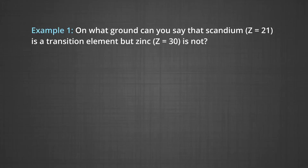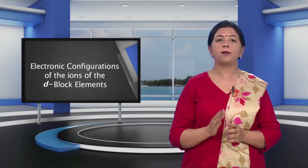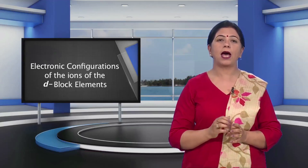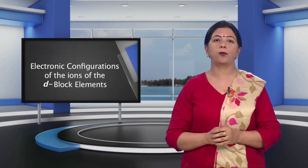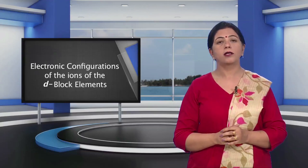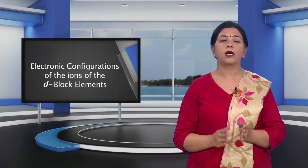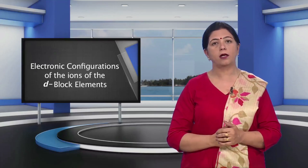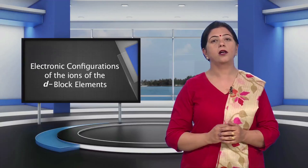Example 1: On what grounds can you say that scandium (Z = 21) is a transition element, but zinc (Z = 30) is not? Scandium atom in its ground state has an incompletely filled 3D¹ orbital, so it is regarded as a transition element. On the other hand, zinc atom has completely filled D orbitals (3D¹⁰) in its ground state as well as in its oxidized state. Hence, it is not regarded as a transition element.